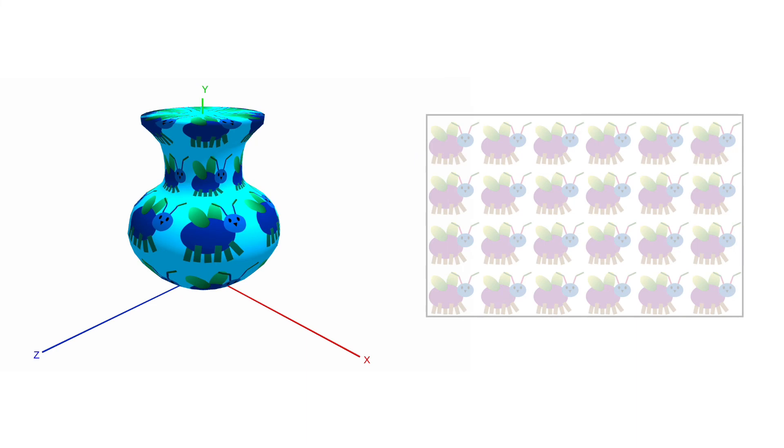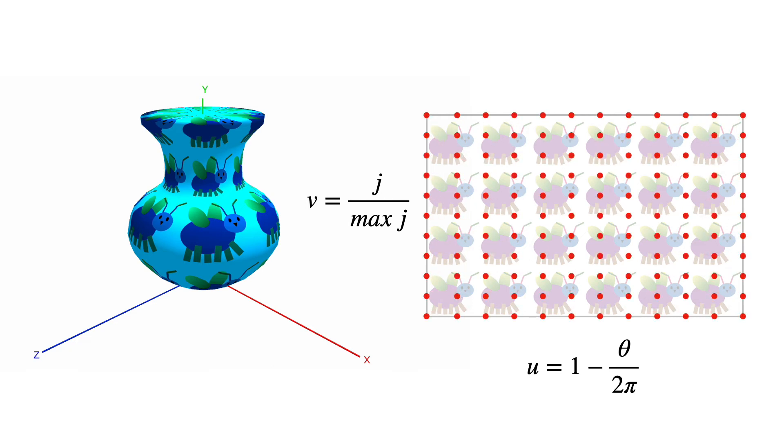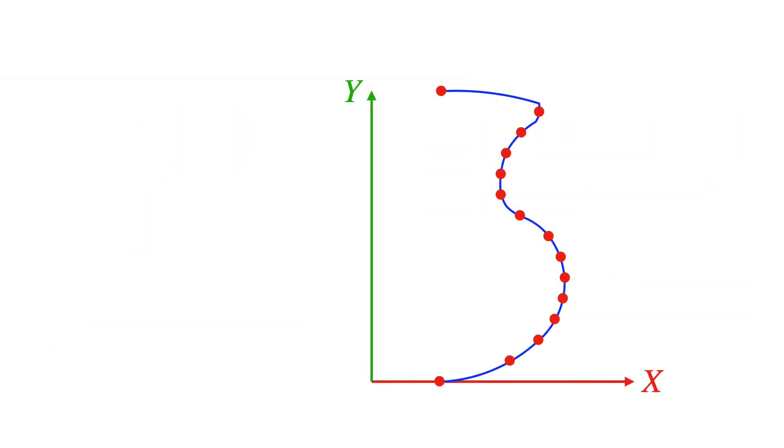The last step is applying a texture map. We'll use the same u parameterization as for the cylinder. And v can just be the normalized point index. This samples the texture image on a regular grid. However, you'll notice on the left that the bug gets vertically stretched by different amounts. This is due to the uneven spacing of mesh vertices. Texture gets stretched on big triangles and compressed on small ones.